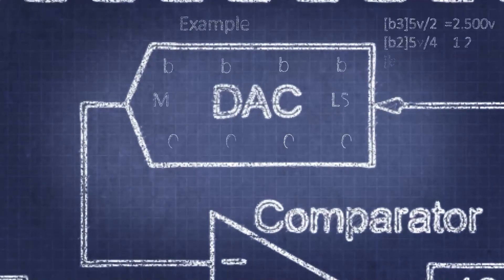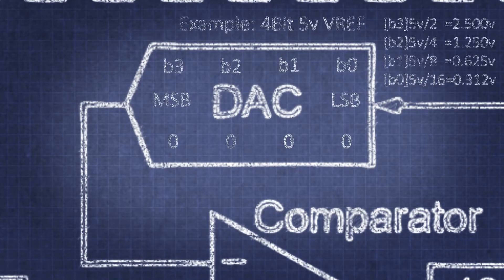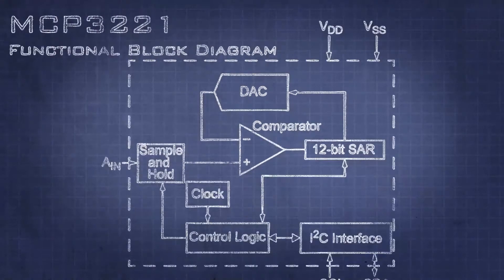Now on to how it works. Because the MSB is one half the DAC reference voltage and each bit down the line to the LSB is one half the previous bit's voltage, you end up with a binary weighted mechanism to quickly approximate the input voltage. The cycle works like this.